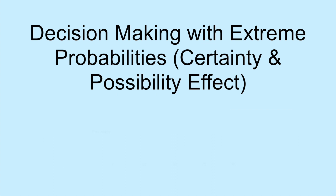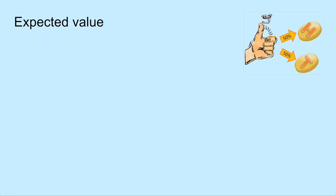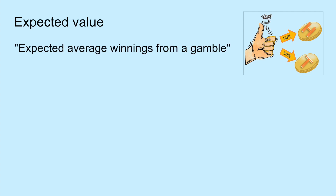In this video, I'll be explaining some human biases when making decisions that involve extreme probabilities and the potential costs that come with this. The purpose is to help you understand where these biases have appeared in your own decision making. Before we jump into the biases, we need to first understand expected value. You can think of expected value as the expected average winnings of a gamble.